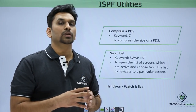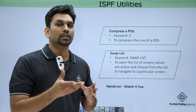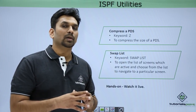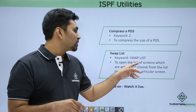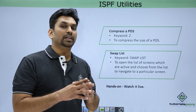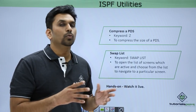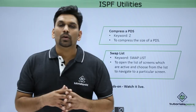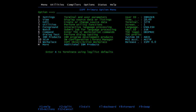For the Swap List, F9 is used for swapping from one session to another. If you have opened multiple sessions and want to see them all, type 'SWAPLIST' in the command line. It will open a new menu showing the list of all active screens, and you can choose from the list to navigate to a particular screen.